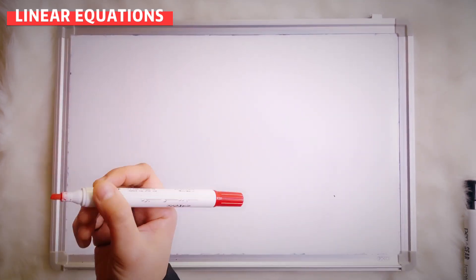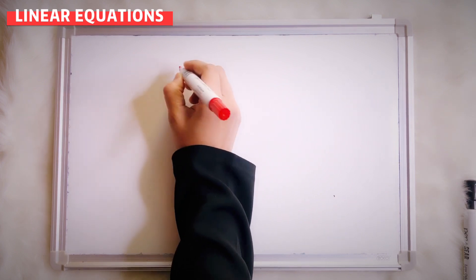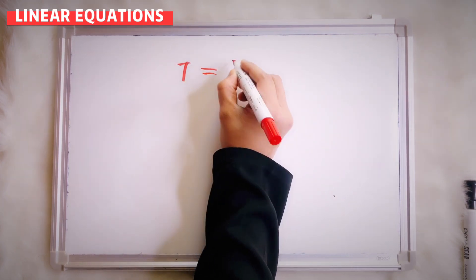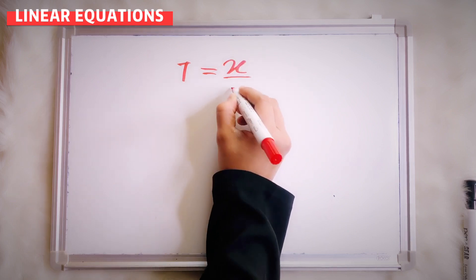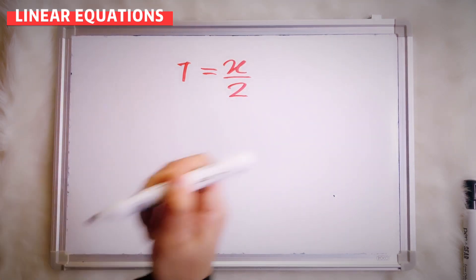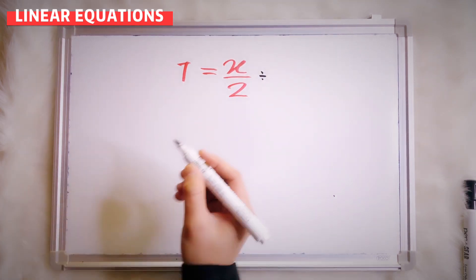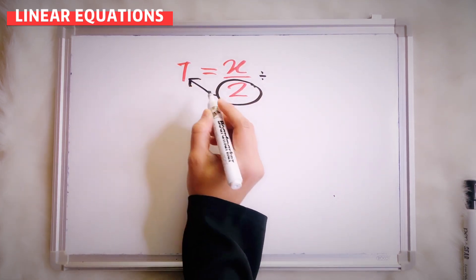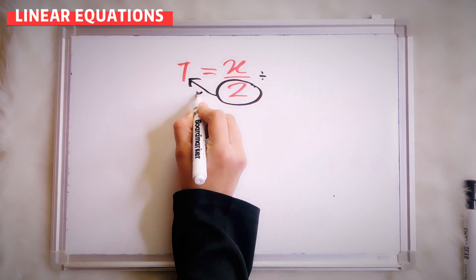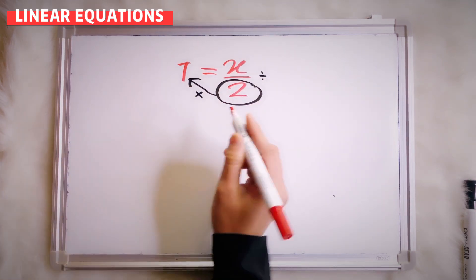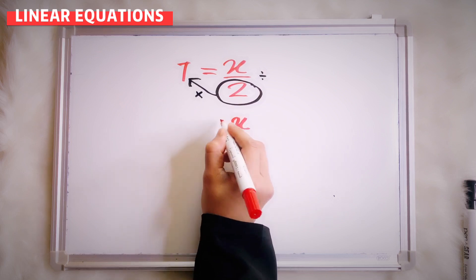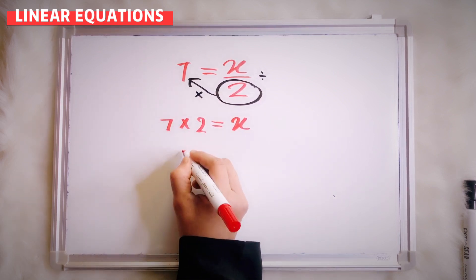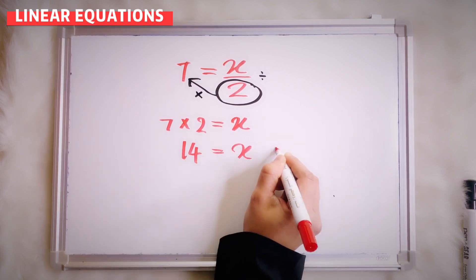Let's say I give you 7 equals to x over 2. This line means divide. When you want to transfer 2 to the left side, the opposite of divide is multiply. So you will have x equals to 7 times 2, which equals 14.